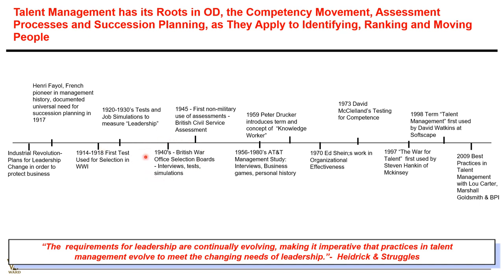In the 1940s, the British War Office Selection Boards introduced the process of filtering and choosing the best candidates. 1945 saw the first non-military usage of assessment in civil society to screen the best talent available. By 1956 to 1988, modern adaptations of management studies emerged — proper interviews, business games, personal history, and background checks. In 1959, Peter Drucker introduced the term 'knowledge workers,' where intellectual ability and human capital were formally recognized.